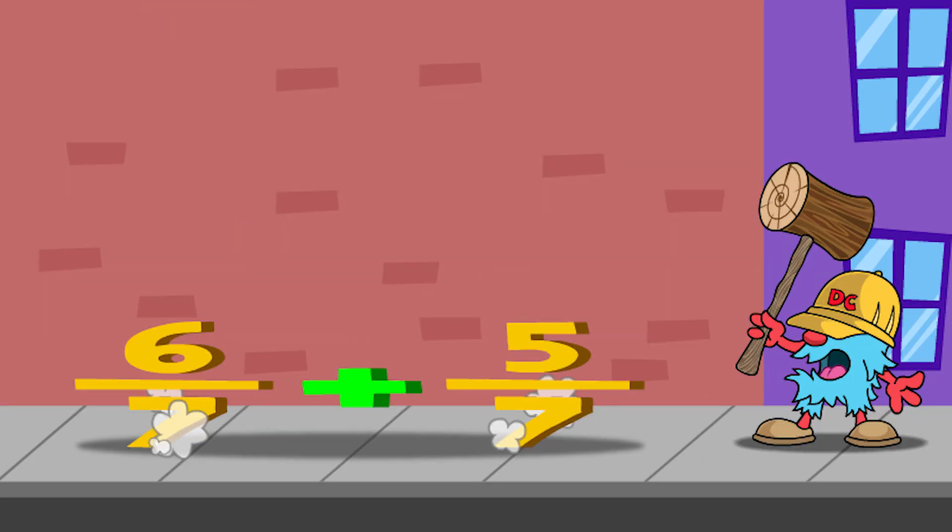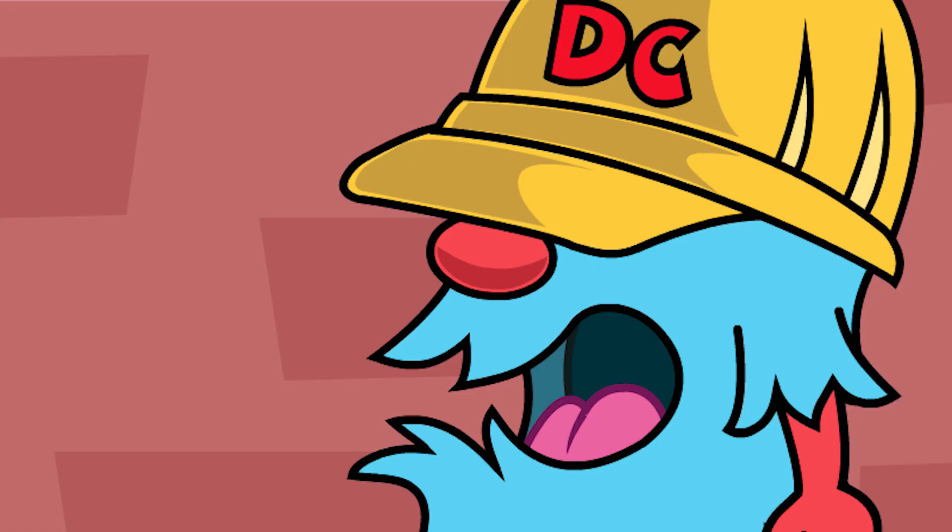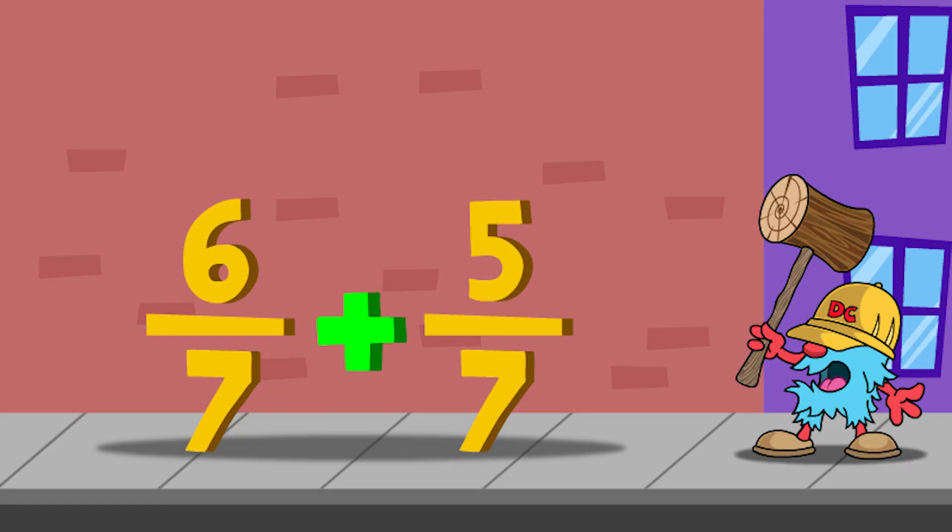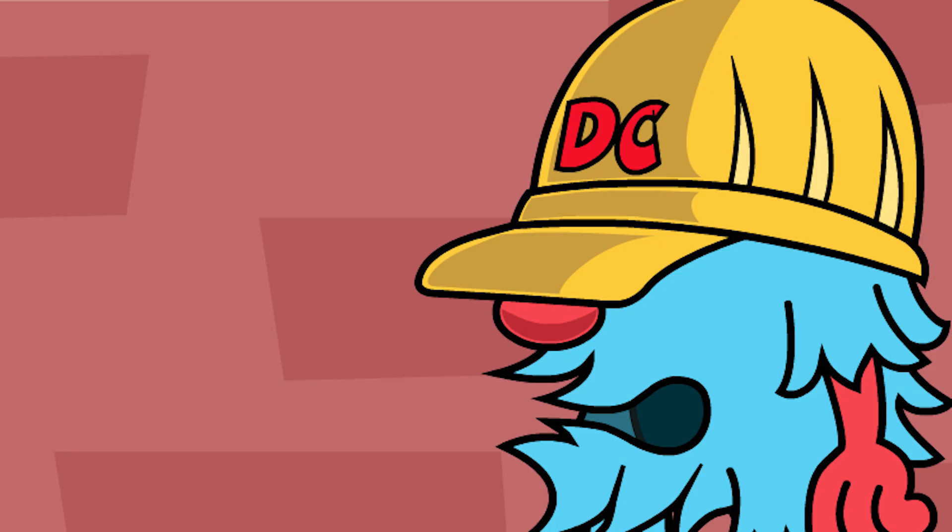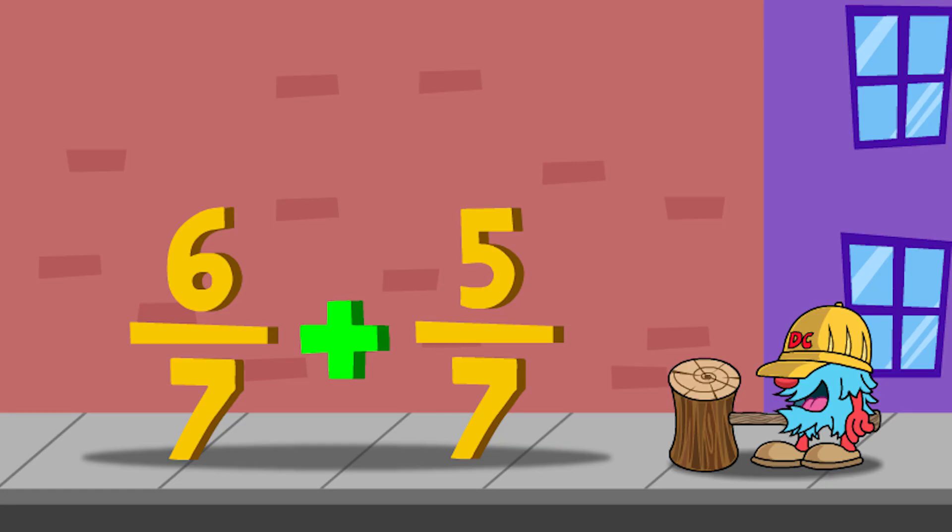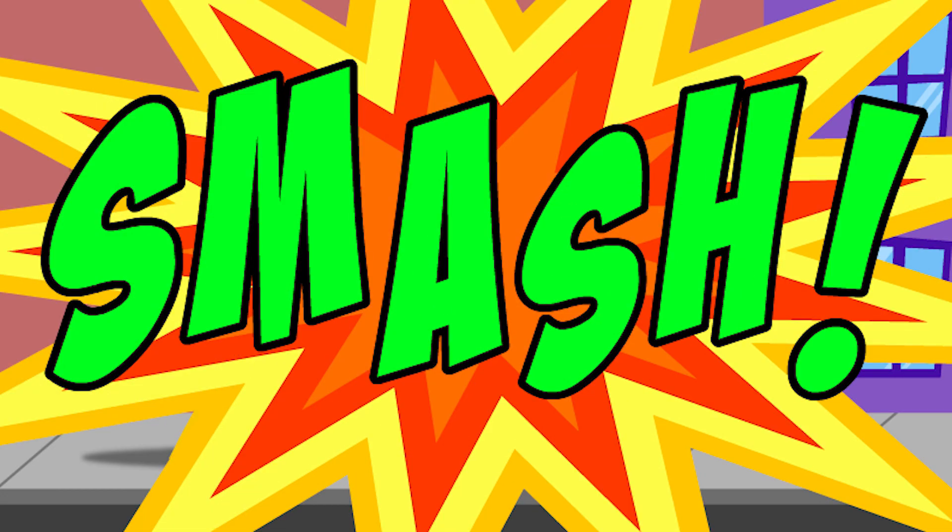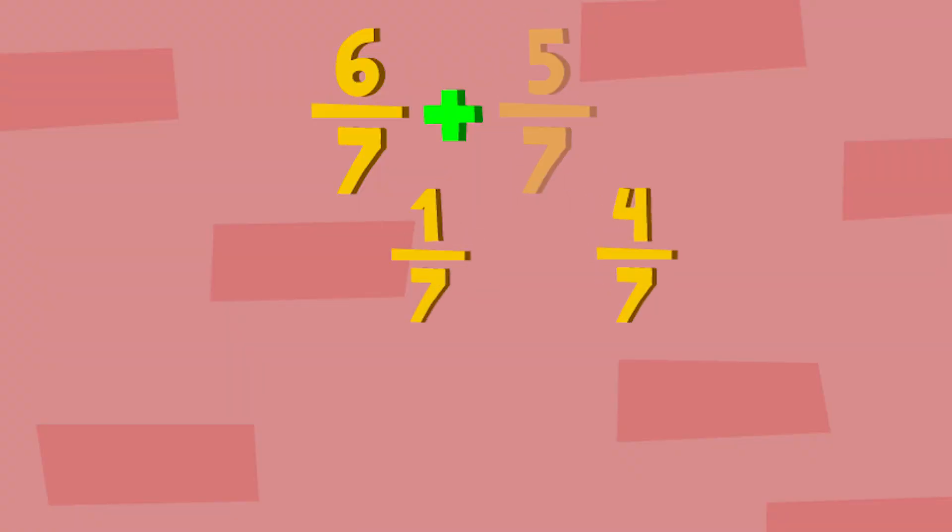Watch out, D.C. What? Fractions? How is D.C. going to use this strategy now with fractions? With fractions, D.C. might look at this differently. Let's see what he does. He has an idea. He's going to take the 5 sevenths and smash it and decompose it into 1 seventh plus 4 sevenths.